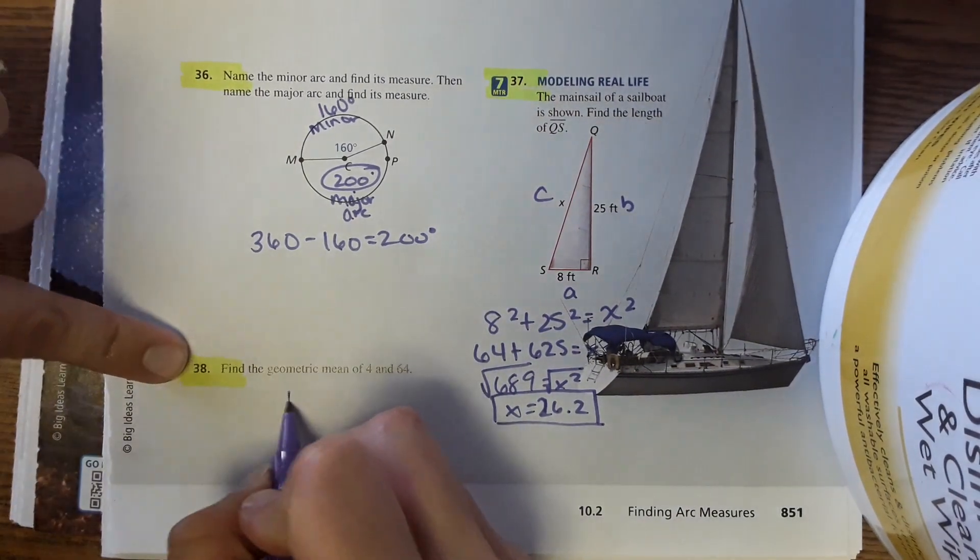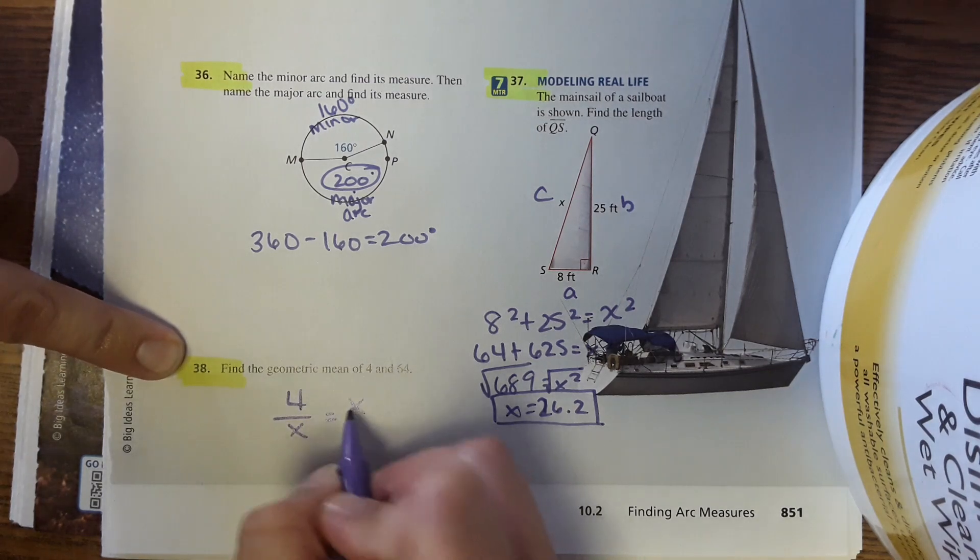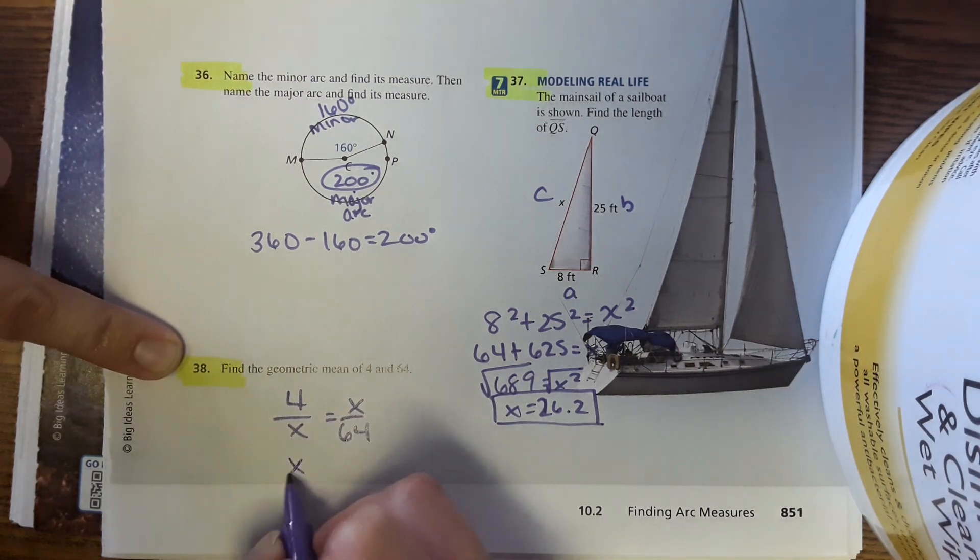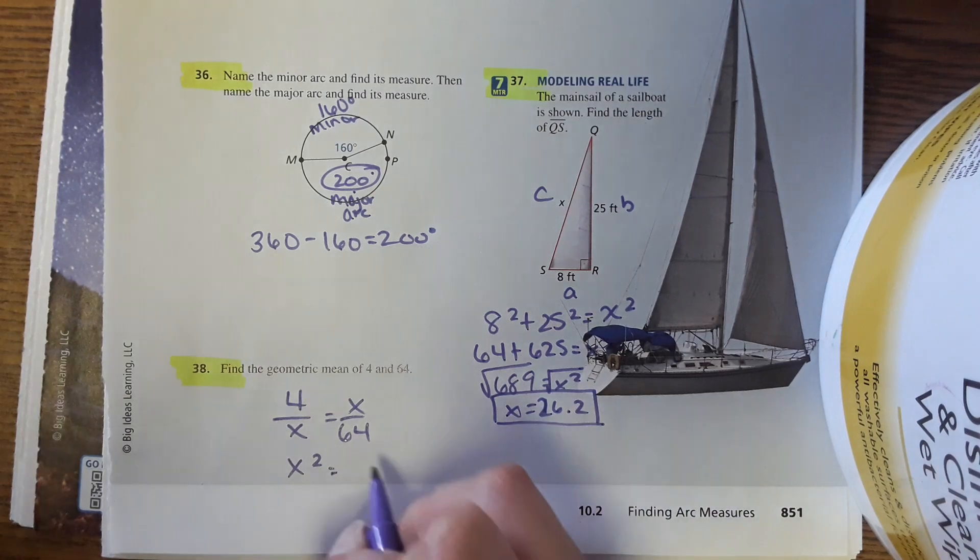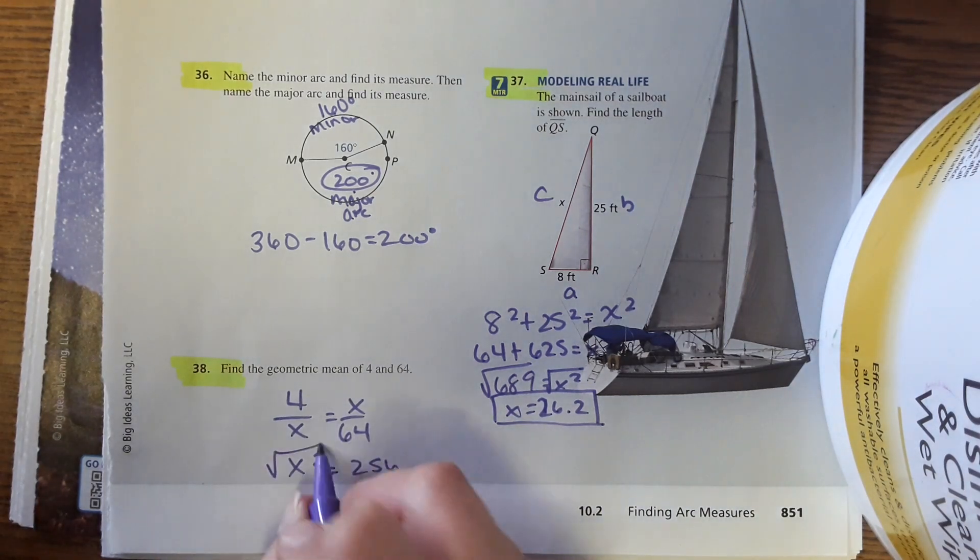Do you remember that setup? It's 4 over x equals x over 64, and then you cross multiply, yeah, and x equals 16.